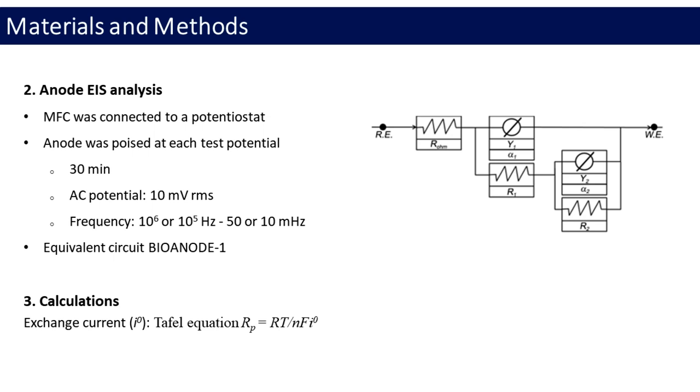Exchange current, I0, was calculated via Tafel equation, where N is the number of electrons involved in the reaction. Potential values were reported with respect to Ag/AgCl using the equation of Ag/AgCl equals SHE, 197 mV.